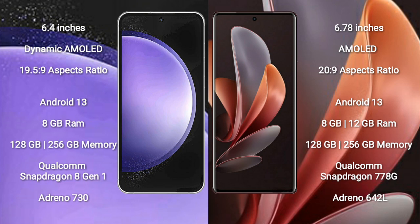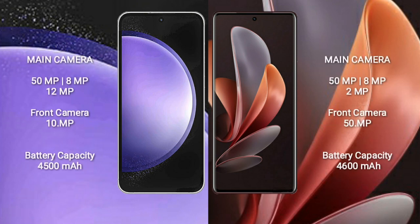vivo V29 comes with 8GB or 12GB RAM and 128GB to 256GB internal storage, with a Qualcomm Snapdragon 778G processor and GPU Adreno 642L. Samsung Galaxy S23 FE features a triple rear camera setup of 50MP plus 8MP plus 2MP.